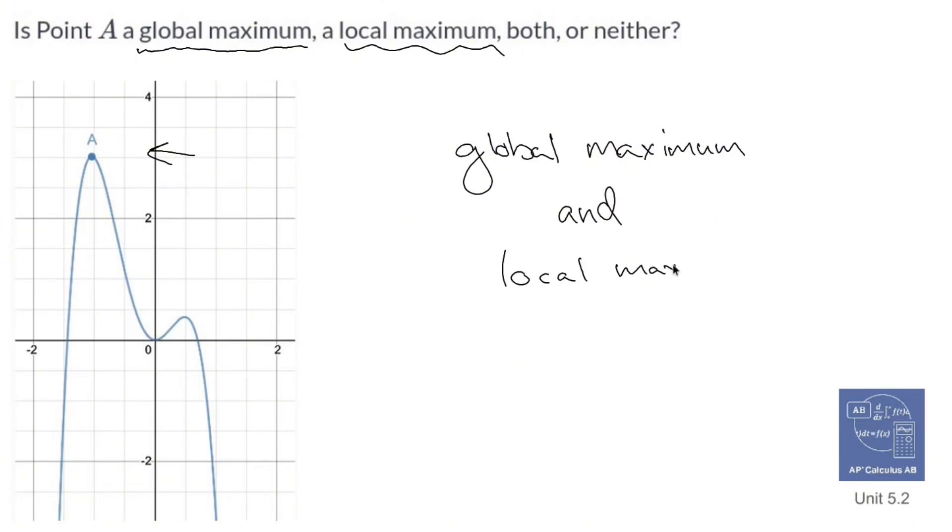Now, there's only one global maximum, and it's A. Technically, you're a local maximum right here. But I'm not asking about that thing right there. I'm asking about A. And A is considered both a global max and a local max. By the way, global is also called absolute maximum, just in case you were dying to know.